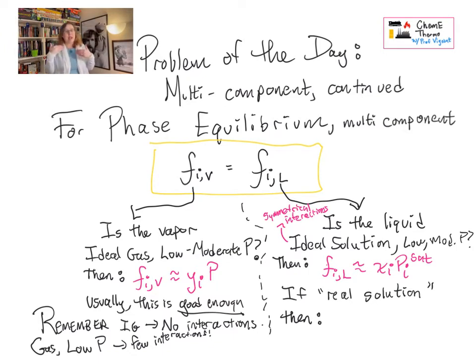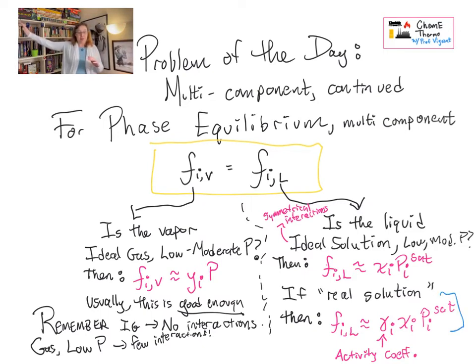If you have something that has unequal interactions, that is what we call more of a real solution, not an ideal solution, we have an approach that will capture that. At still low to moderate pressure, we use a correction called the activity coefficient. So that's the gamma. Gamma i xi pi sat. We're not going to talk too much about activity just yet. That's coming up really soon. But I just want you to know that we're going to have an approach to describe non-ideal solutions.